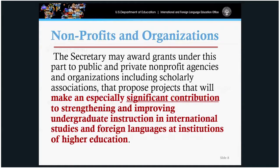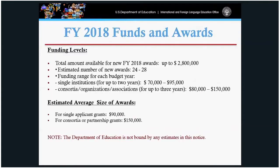For 2018, we have approximately $2.8 million dollars and hope to make up to 28 new awards. For single applicants, you can request up to $95,000 per year, and for consortial applicants up to $150,000 per year. The average single applicant will receive roughly $90,000, with $150,000 going to the average consortial applicant.